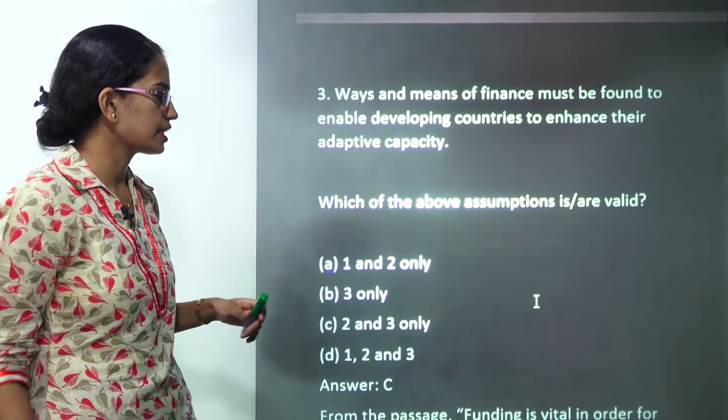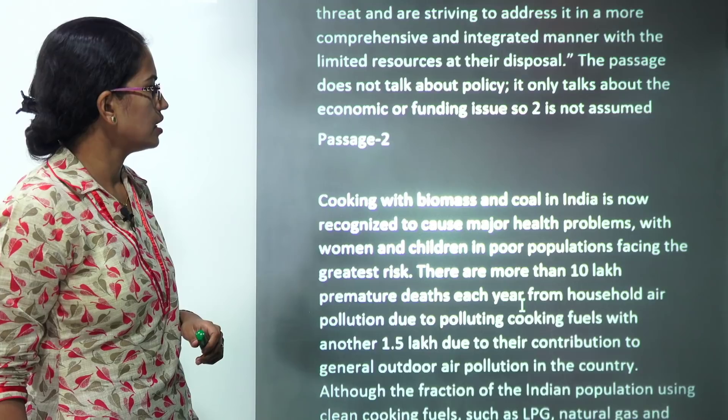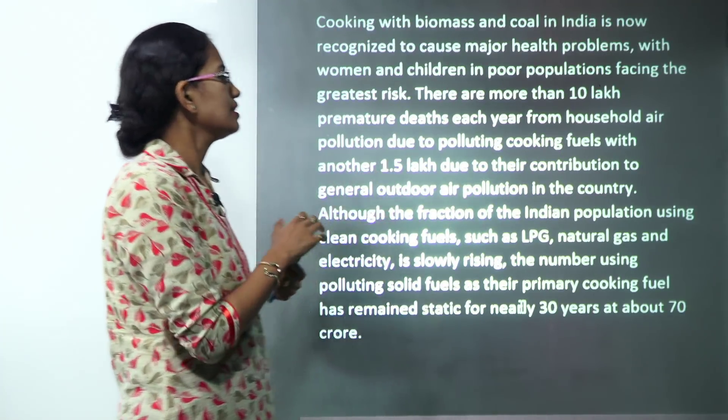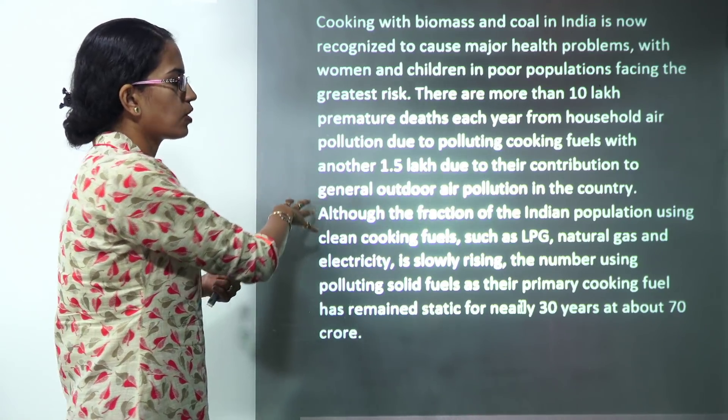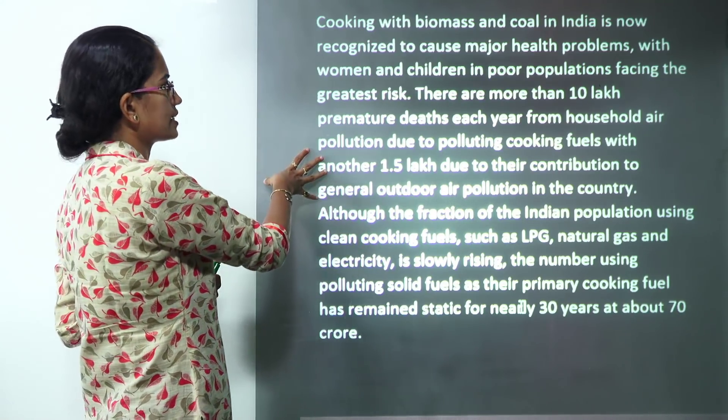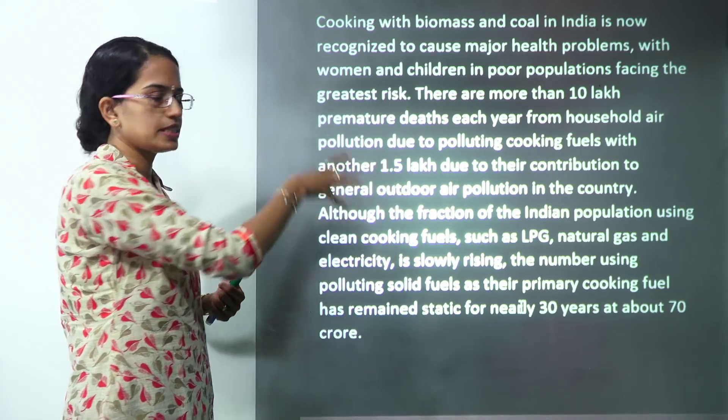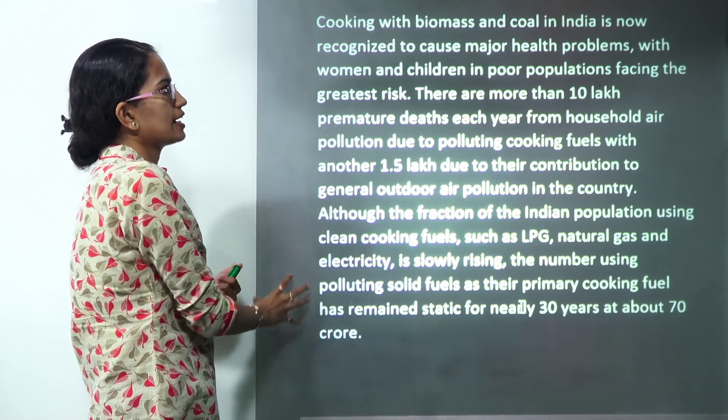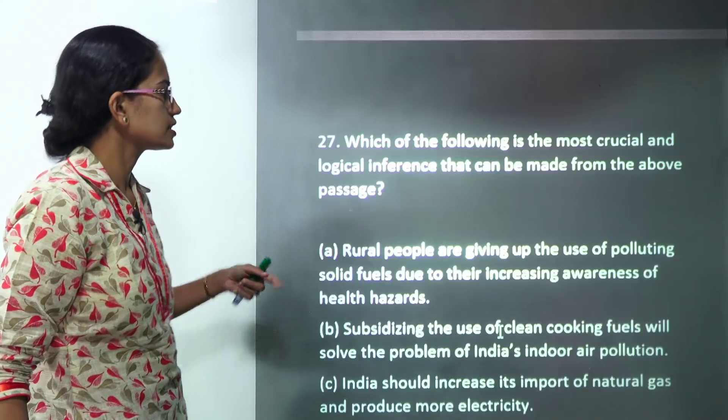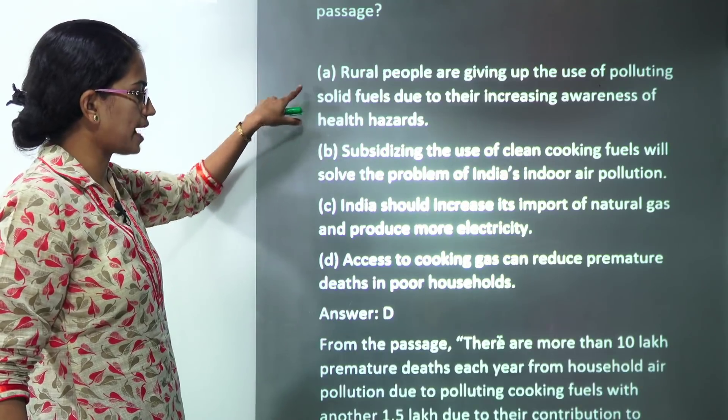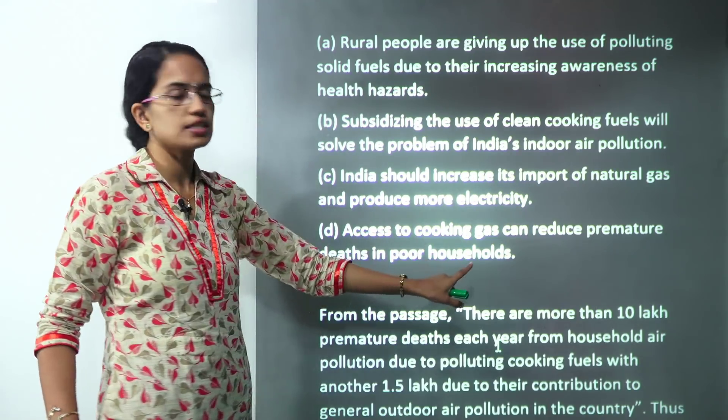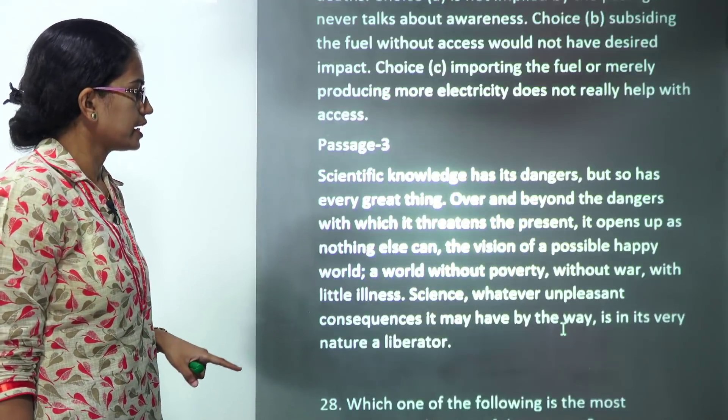The next passage talks about cooking with fuel and this cooking has led to premature death because of outdoor air pollution. It has not talked about the LPG scheme that has been released. So subsidy on LPG has not been the focus. The main idea here is if we are cooking on coal, it leads to outdoor pollution which causes premature deaths. So here the most logical inference is access to cooking gas can reduce premature deaths in poor households. So D becomes your correct answer here.